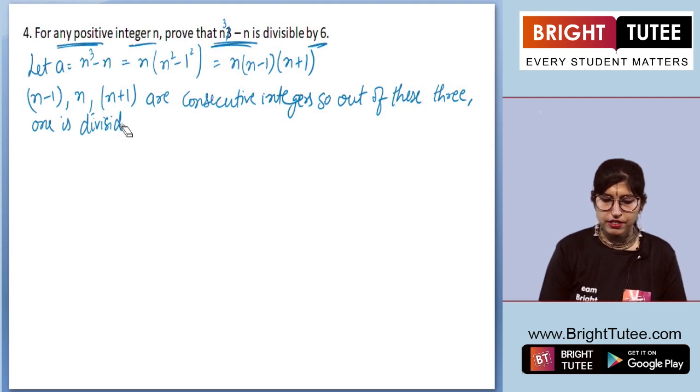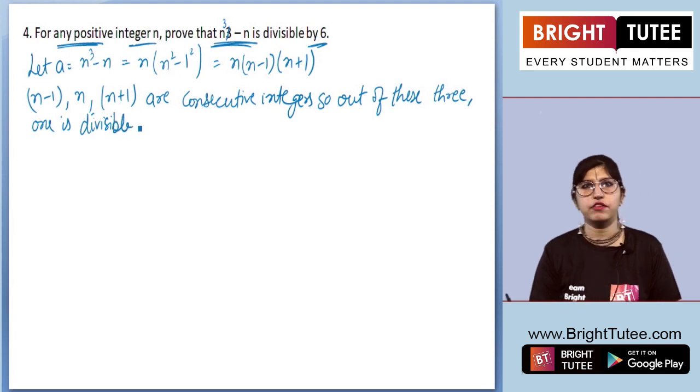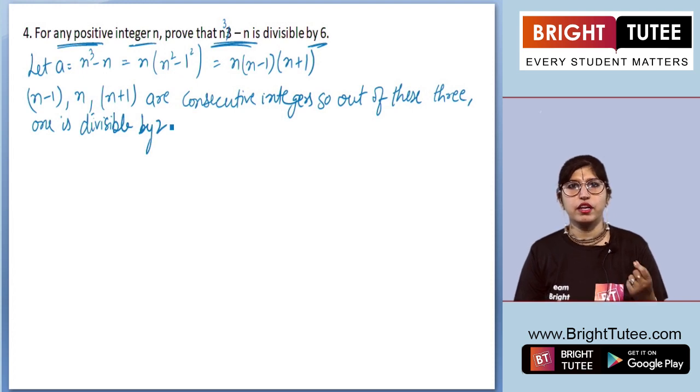How come? Let's say we have any 3 consecutive integers. Let's take 4, 5, 6. There is at least 1 number which is even, divisible by 2.